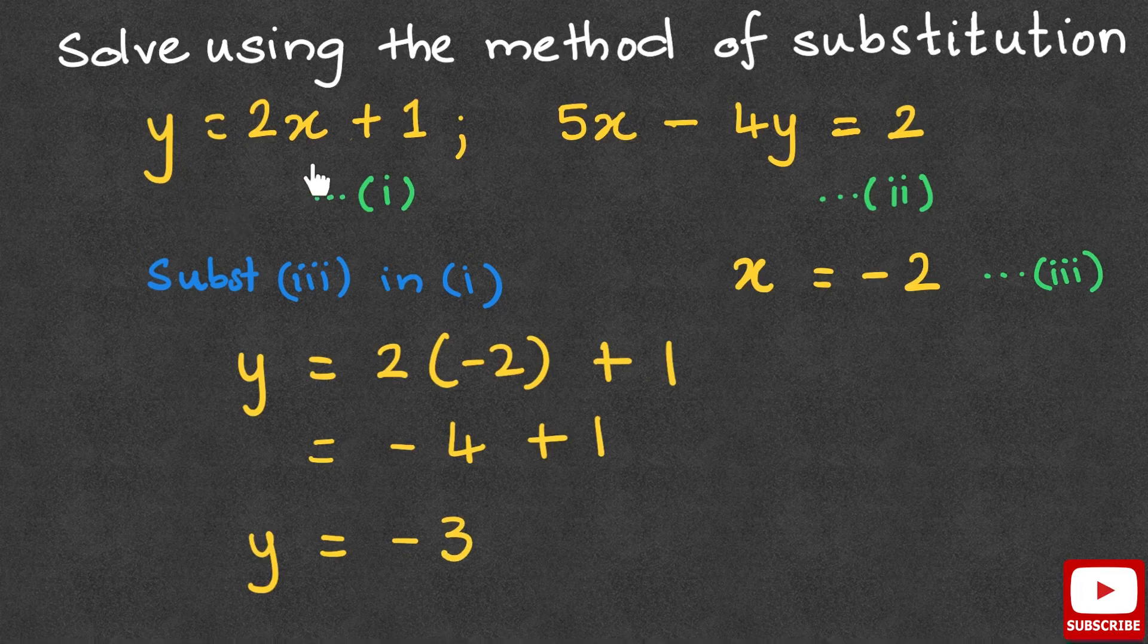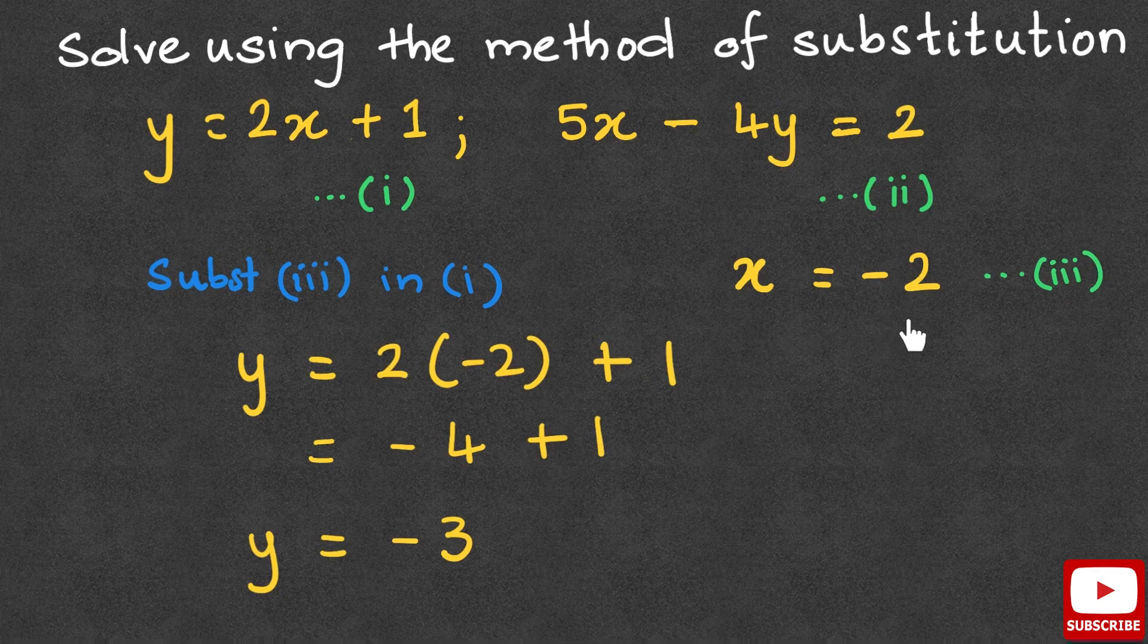So the solution of the two simultaneous equations is x equals negative 2 and y equals negative 3.